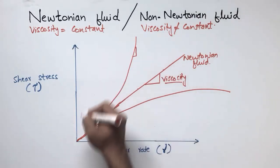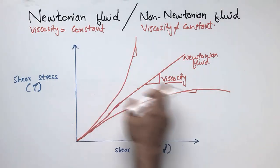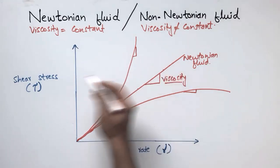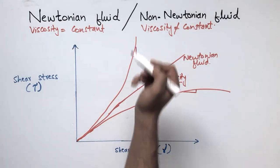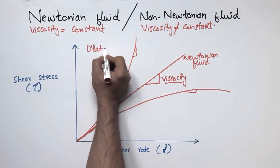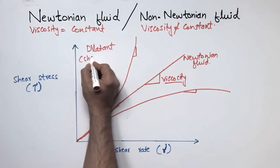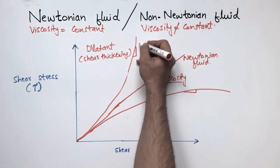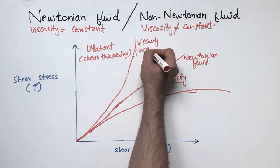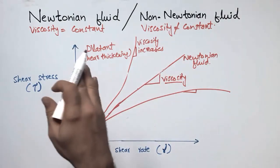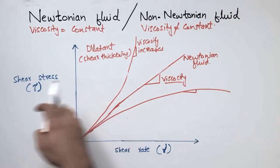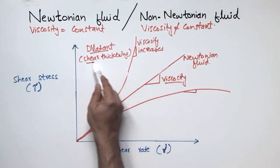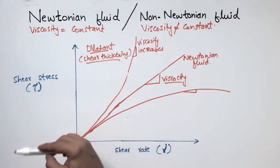In one case the slope is increasing, and in the other case the slope is decreasing. These two types of fluid are called non-Newtonian fluid but they hold different names in fluid mechanics. When the viscosity of the fluid increases with increasing shear stress, we call this type of fluid dilatant. It shows shear thickening behavior, meaning the viscosity increases. The shear rate does not increase in the same way as the shear stress — this is the shear thickening behavior.